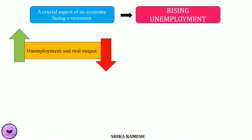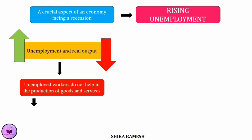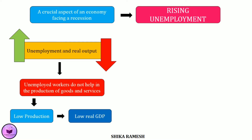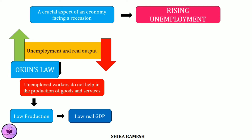So when unemployment is rising, it means that more and more labourers are sitting idle in their homes. And these unemployed workers are not helping in the production of goods and services in the economy. So ultimately the production of goods and services will be low and that will directly affect the real GDP — that is, real GDP will also be low. Therefore when unemployment increases, the real output decreases. This inverse relationship is what is called Okun's Law.